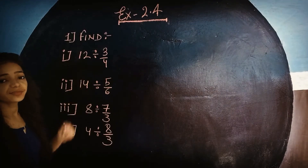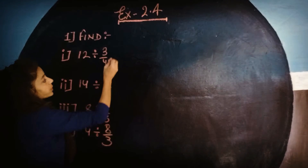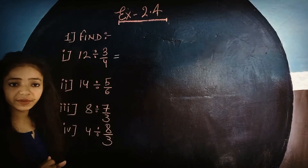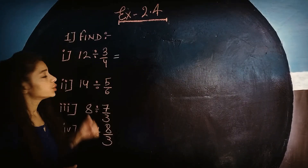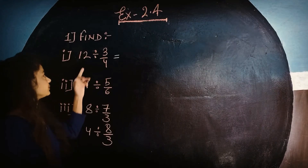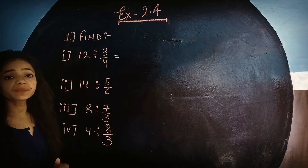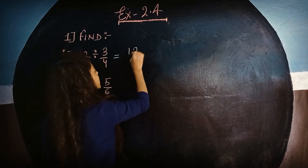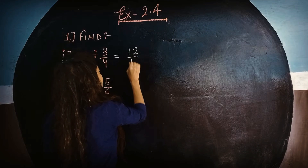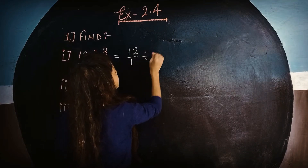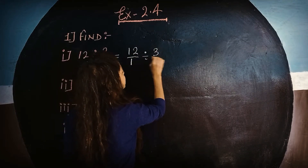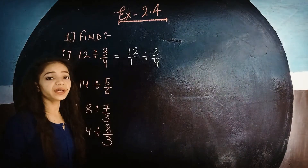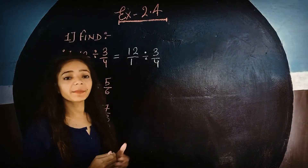This is 12 divided by 3 upon 4. We have only 12 given, so what is the meaning? This is the denominator, so we write it as 12 upon 1. We have the division as it is. Now we have to change the divide into the multiplier.